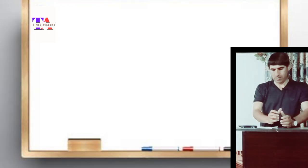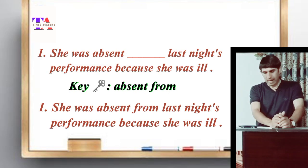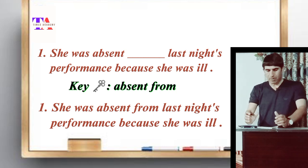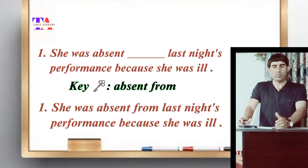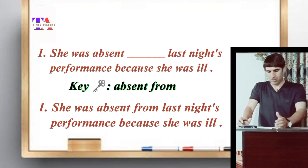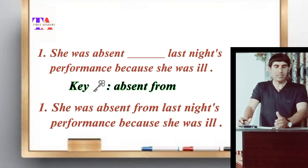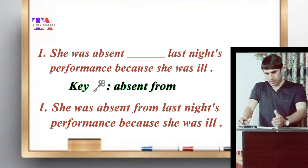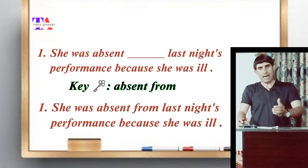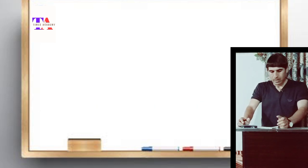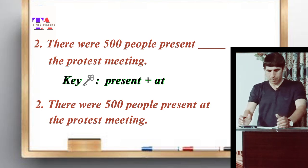The first sentence is: 'She was absent from last night's performance because she was ill.' In this sentence we have the word 'absent', and grammatically it takes the preposition 'from'. So the sentence becomes: she was absent from last night's performance. Remember, the word 'absent' takes 'from'.